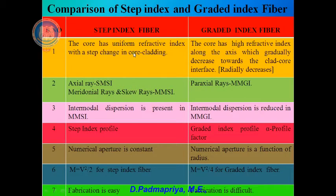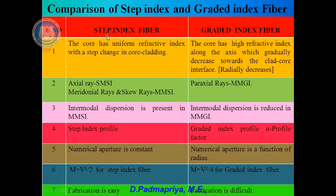Let us now compare step index and graded index fiber. Step index fiber has a uniform core refractive index with a step change at the core-cladding interface, whereas graded index fiber has high refractive index along the axis that gradually decreases towards the interface. Step index fibers take axial, medial and skew ray paths, whereas graded index fiber takes a parabolic path. Intermodal dispersion is present in multimode step index but reduced in multimode graded index. Numerical aperture is constant in step index and a function of radius in graded index. Number of modes is V²/2 for step index and V²/4 for graded index. Fabrication is easier for step index and more difficult for graded index.